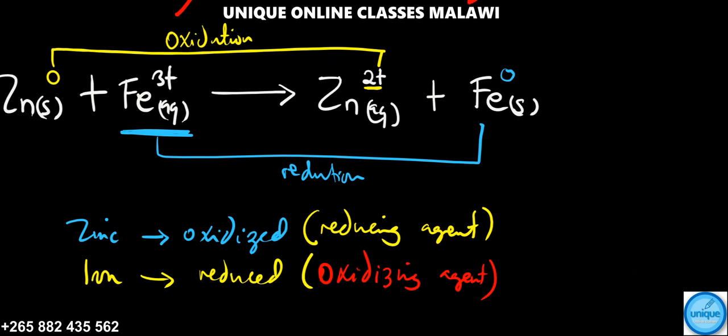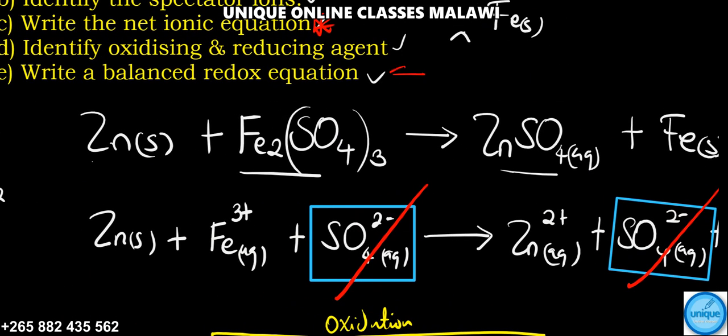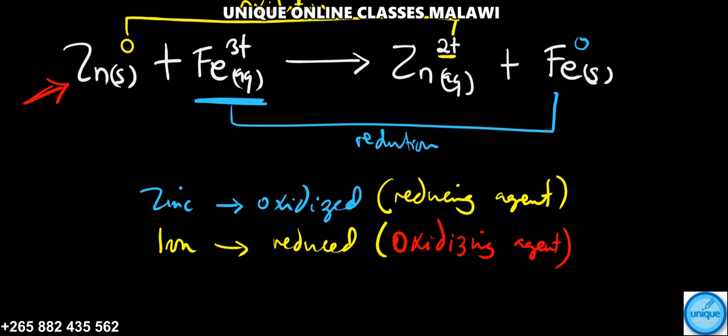Now in our case, we should balance the redox equation. So balancing the redox equation - to balance this one we're going to write the oxidation half equations and reduction half equations. Let me start with the oxidation half equation. Before I proceed, if you enjoy this video please don't forget to subscribe to my channel as well as liking my Facebook page. If you have any question in any subject, my number is +265 882 435 562, that's my WhatsApp number.